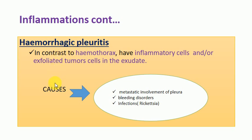The causes of hemorrhagic pleuritis include: metastatic involvement of the pleura — meaning a disease elsewhere (for example, breast cancer) metastasizes and affects the pleura; bleeding disorders such as hemophilia; and infections such as rickettsial infection.